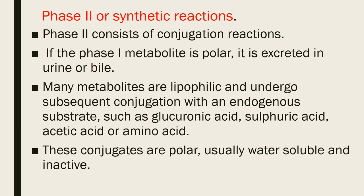Phase 2 or synthetic reactions consist of conjugation reactions. After Phase 1, if metabolites are polar, they will be excreted in urine or bile. If after Phase 1 the metabolites are non-polar or lipophilic, they undergo subsequent conjugation with endogenous substances like glucuronic acid, sulfuric acid, acetic acid, and amino acids. After conjugation, these metabolites are polar, water-soluble, and inactive.